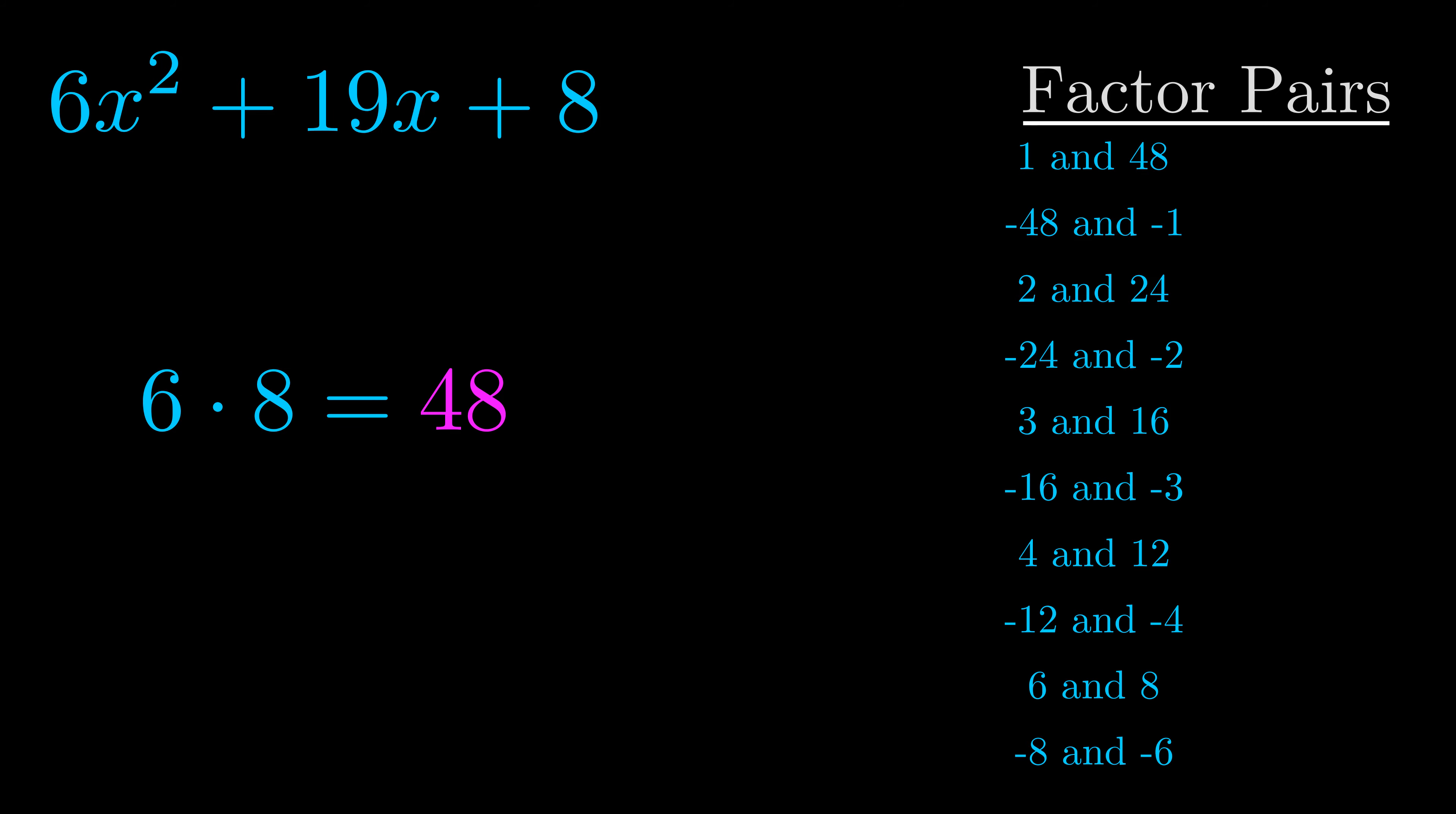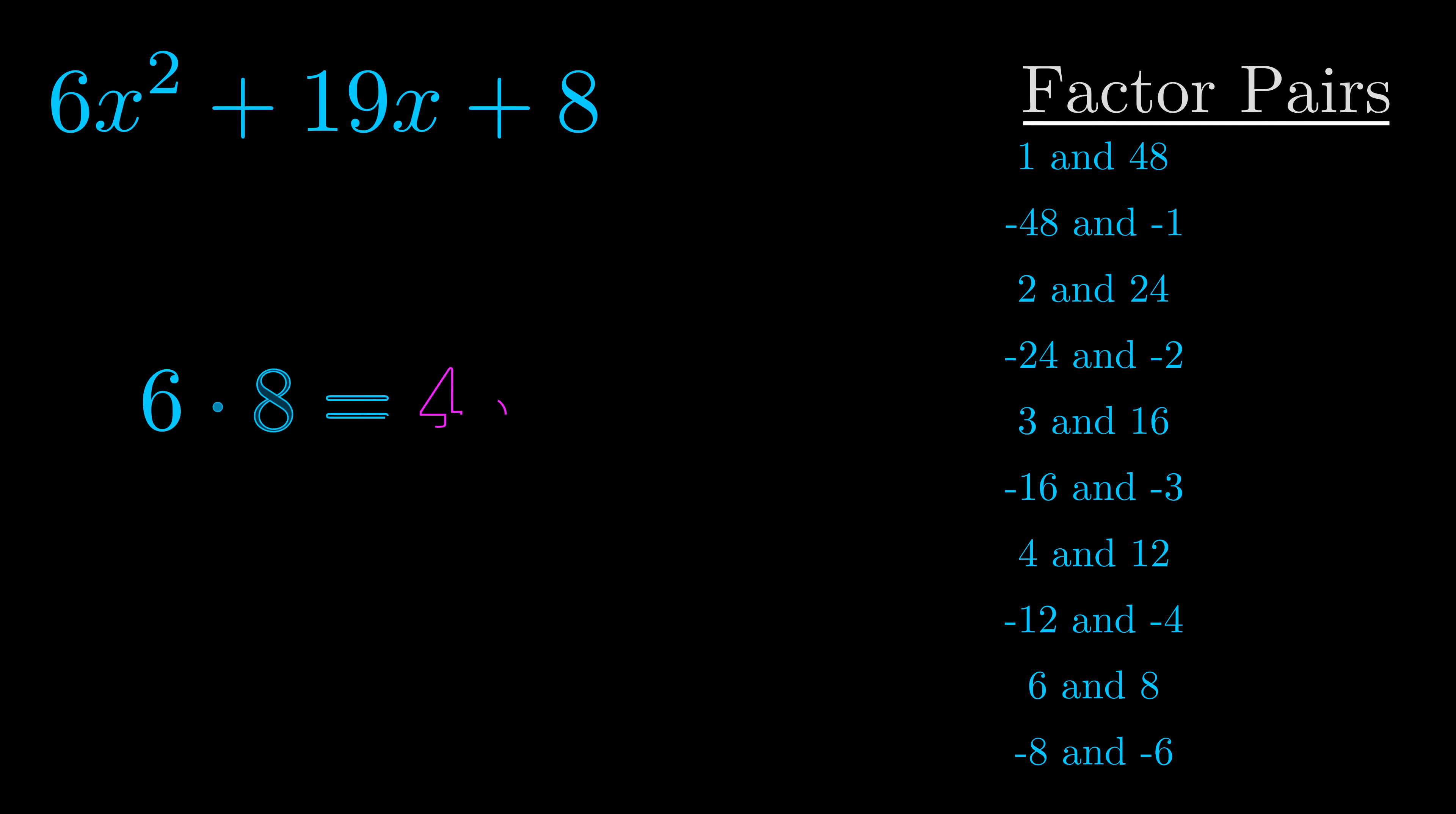Now once you have these factor pairs the goal is to find which of these pairs adds to the b value. The b value is the coefficient on the x term. That's the middle term, the one that we haven't done anything with yet. And really this is the only factor pair that we need.